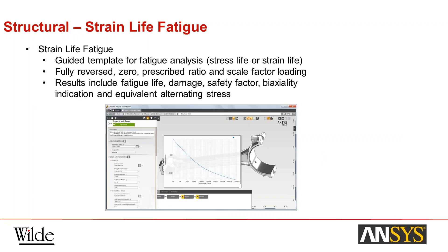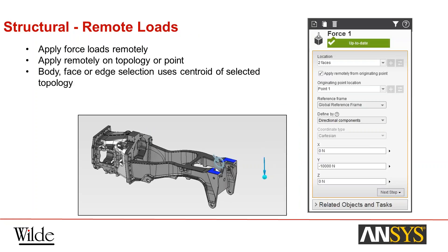For structural modelling, a new feature is strain-life fatigue. There's a guided template for fatigue analysis, including clear reverse, zero, prescribed ratio, and scale factor loading. Results include fatigue life, damage, safety factor, biaxiality indication, and equivalent alternating stress. The picture shown illustrates a life cycle versus stress loading on a strain-life curve. Also new for structural is the ability to apply remote loads, which can be applied on any topology — any part of the geometry or an individual point.